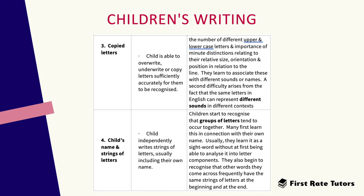The third stage is copied letters, where the child is able to overwrite, underwrite or copy letters sufficiently and accurately for them to be recognised. This is a difficult task given the number of different upper and lowercase letters, as well as understanding minute distinctions relating to their relative size, orientation and position. Children at this stage also learn to associate letters and words with different sounds and names. Another difficulty is that the same letters in English can represent different sounds in different contexts.